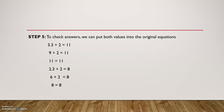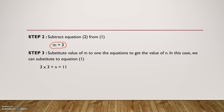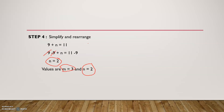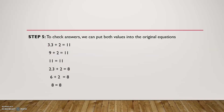Step 5: to check our answers we can put both values into the original equations. The first equation was 3m plus n equals 11, so substituting m equals 3 and n equals 2 gives 3 times 3 plus 2 equals 11, which is 9 plus 2 equals 11 — that's 11 equals 11. The equation balances, so our answers are correct.